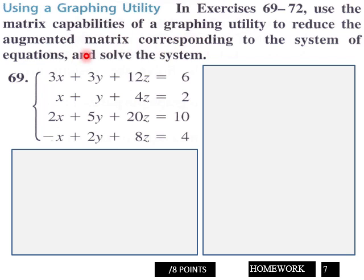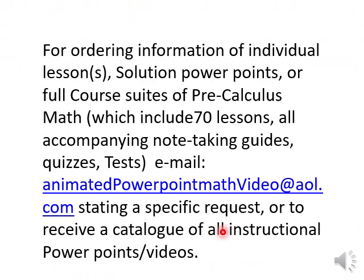Use the graphing calculator to reduce the augmented matrix corresponding to the system of equations and then solve the system here. Use your graphing calculator for this and you get eight points for that. Show your screenshots here in your response boxes. Eight points page seven, and that is your part four homework for 7.4 precalculus math.